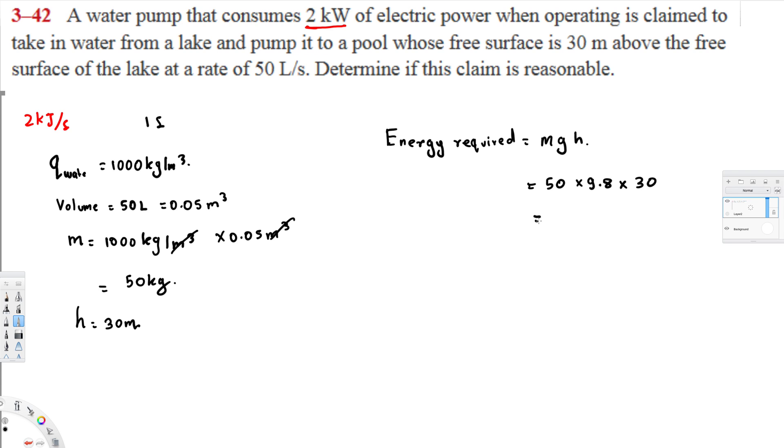So 50 times 9.8 times 30 meter height, and if you calculate this one you'll get 14,700 joules. And this is in joules. We're dealing with kilojoules, and this is kilojoules per second, so let's try to convert this one to kilojoules per second. So all I have to do is simply divide this by 1000. That's going to give us 14.7 kilojoules.